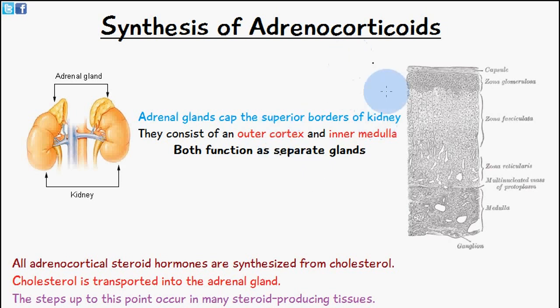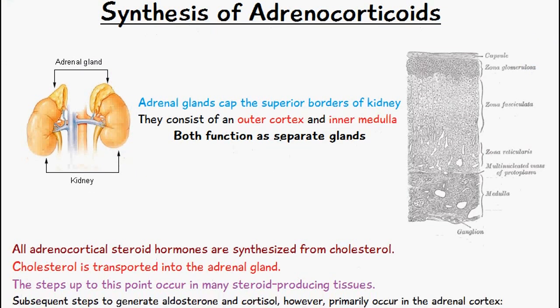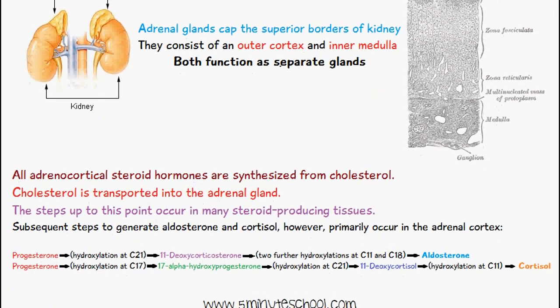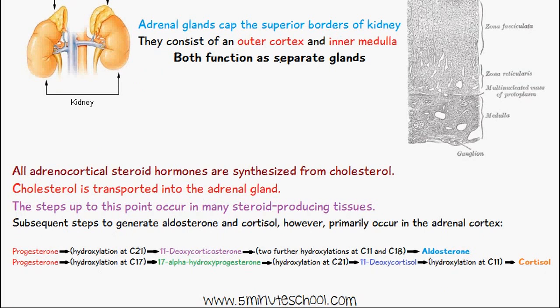To recap some information about the adrenal glands: you can see them located on the top, the superior borders of the kidney. They consist of the outer cortex and the inner medulla, and they both function as separate glands. All adrenal cortical steroid hormones are synthesized from cholesterol, which is transported into the adrenal glands.